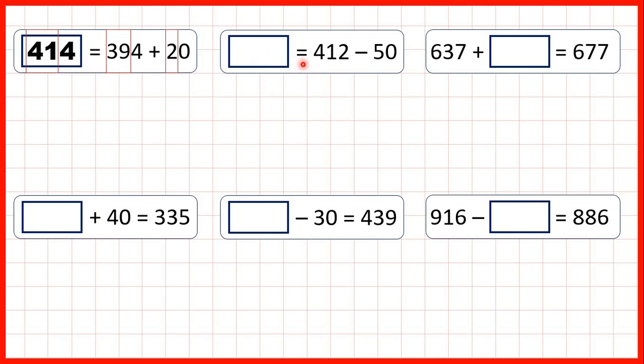So now something equals 412 minus 50. All we've got on this side of the equal sign is an answer box, so we just do the calculation. Again, our ones digit will stay the same because we're not subtracting any ones, and 41 minus 5 is 36. So we can write 36, and then a 2, because 41 minus 5 is 36, and our ones digit stays the same.